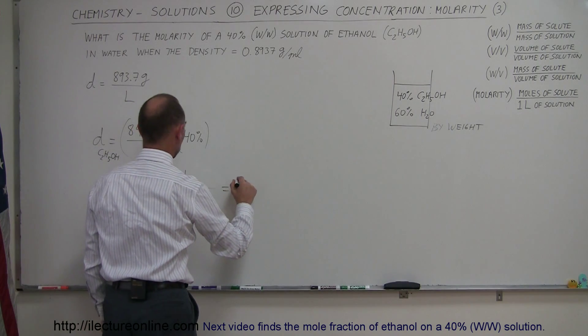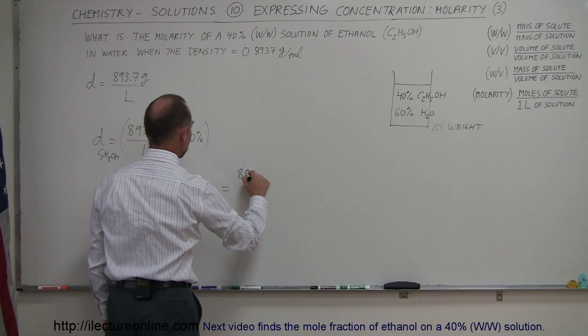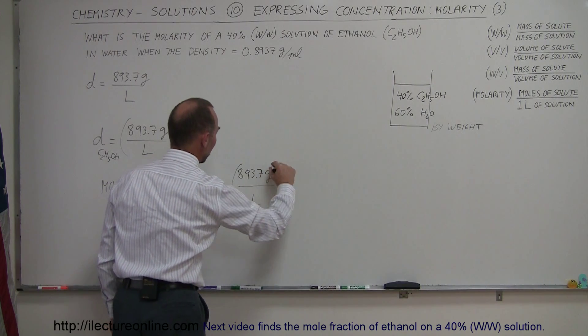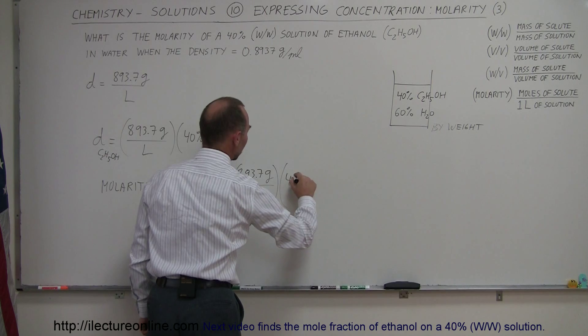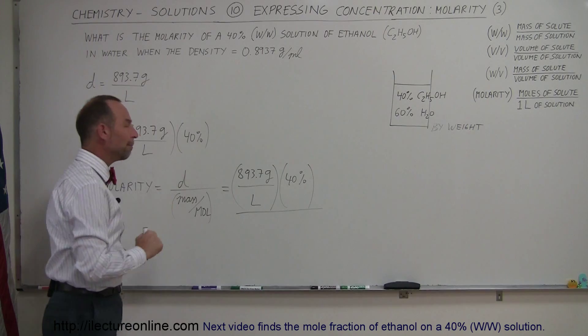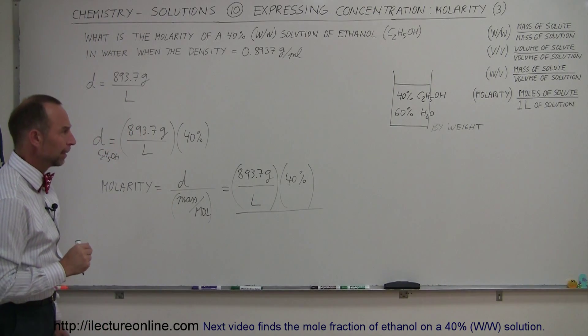So the density here is equal to 893.7 grams per liter. We have to multiply it times 40% because we only want the ethanol, we don't want the water, and then we're going to divide by the molar mass of the ethanol.